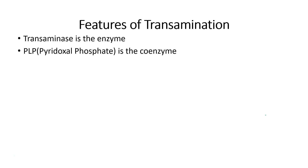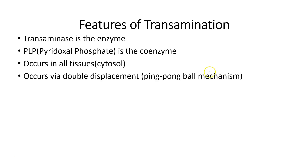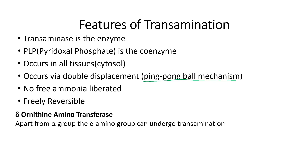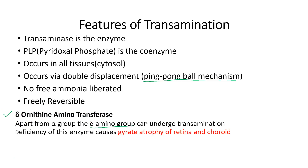Features of transamination: the enzyme required is transaminase, which requires the coenzyme pyridoxal phosphate. It occurs in all tissues of the body in the cytoplasm. The mechanism is the ping-pong ball mechanism. It is a freely reversible reaction. Apart from the alpha amino group, the delta amino group may also undergo transamination — an example is the delta ornithine aminotransferase enzyme, whose deficiency can cause gyrate atrophy of retina and choroid. Pyridoxine can be used for treatment since the coenzyme required is pyridoxal phosphate.